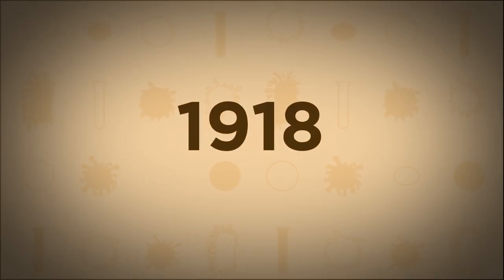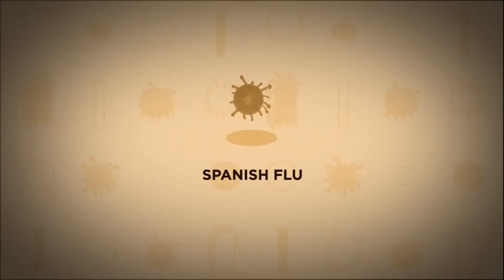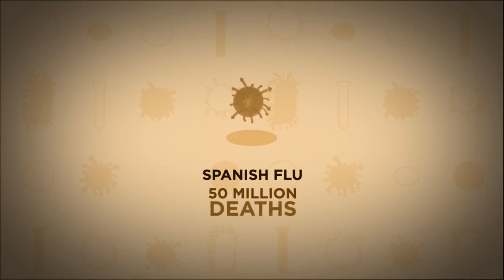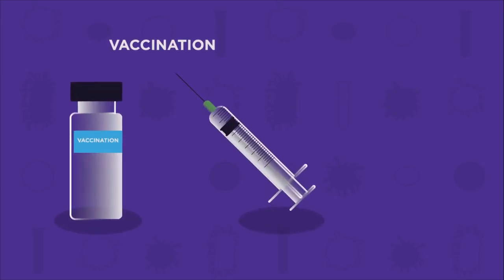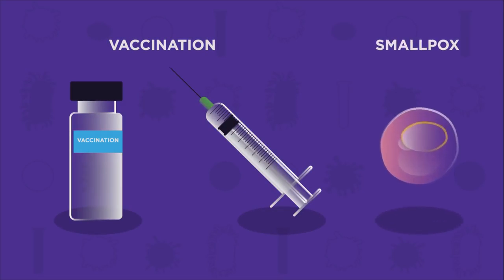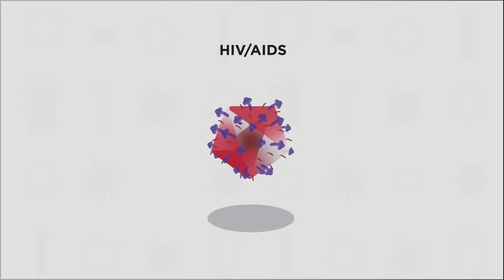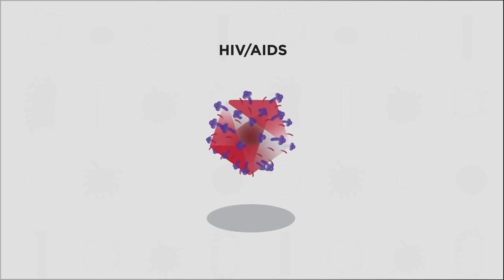In 1918, the Spanish flu is thought to have caused up to 50 million deaths worldwide. Scientists have developed vaccinations against lots of viruses, which have even led to the eradication of some viruses like smallpox as human hosts become immune. However, some viruses like HIV have proved impossible to develop any kind of vaccine for.